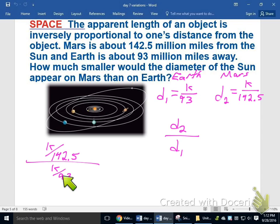I can actually invert this fraction down here to make it k over 142.5. The numerator will multiply it by 93 over k. And what happens there is the k's will cancel, and I have 93 over 142.5.